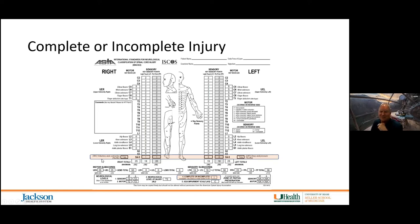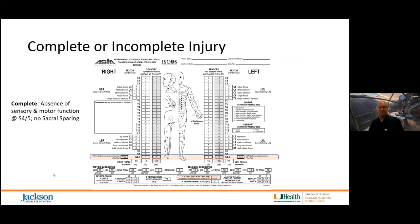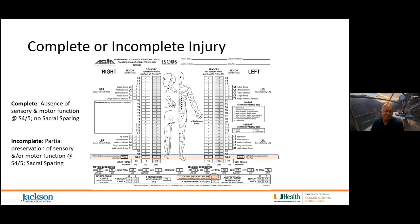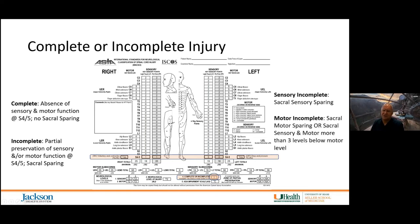Complete versus incomplete injury comes down to the sacral elements. If you have anything other than NOON at the S4 level — that is, anything other than zero/zero/zero/zero/zero/no — then you have an incomplete injury. Complete injury is defined as absence of sensory and motor function in S4-S5 dermatomes. Incomplete is anything less than NOON. Sacral sparing means voluntary anal contraction is present, which you report as a motor incomplete finding.